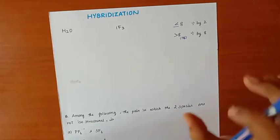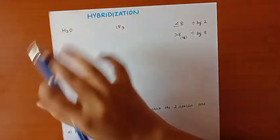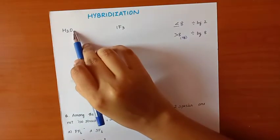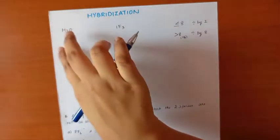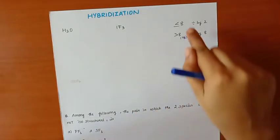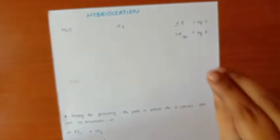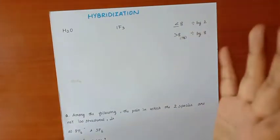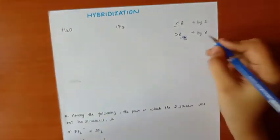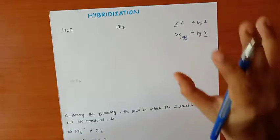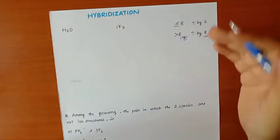Now, the method: first, count the valence electrons of the compound. If the value is 8 or less than 8, divide by 2. If greater than 8, divide by 8.